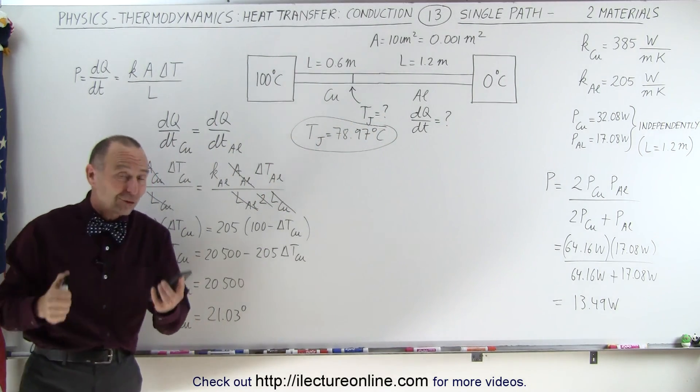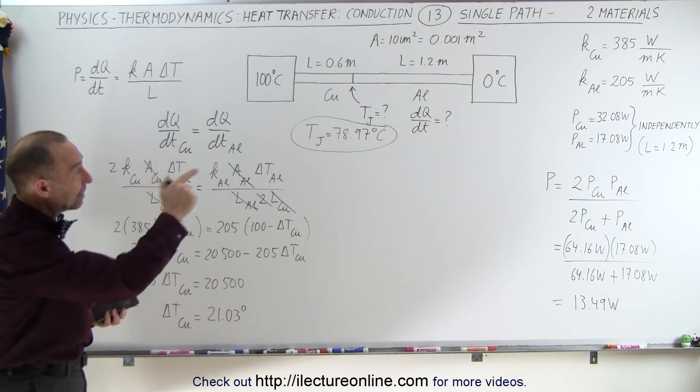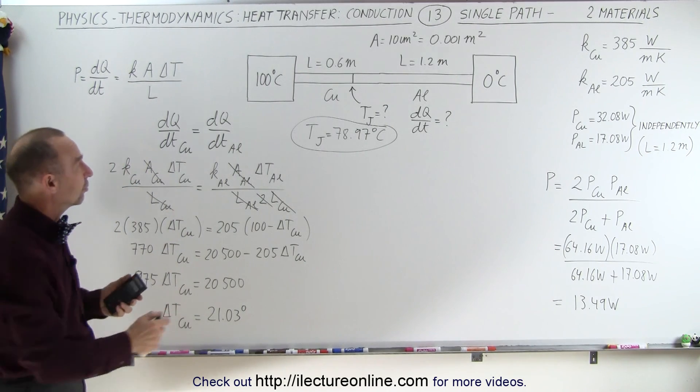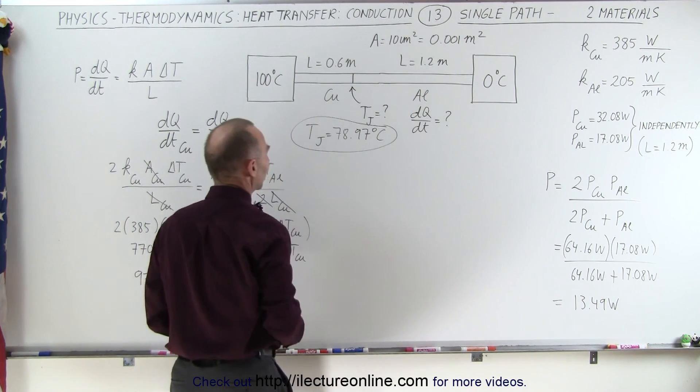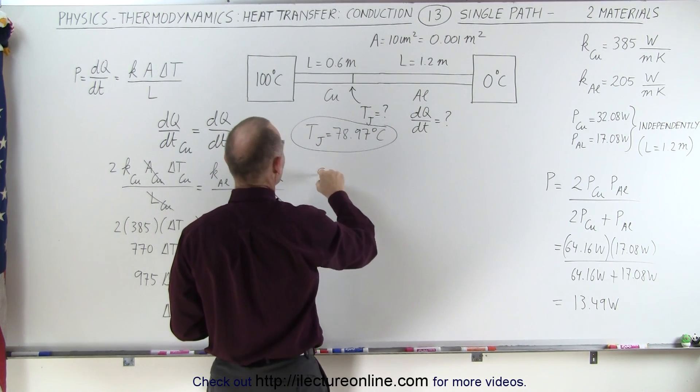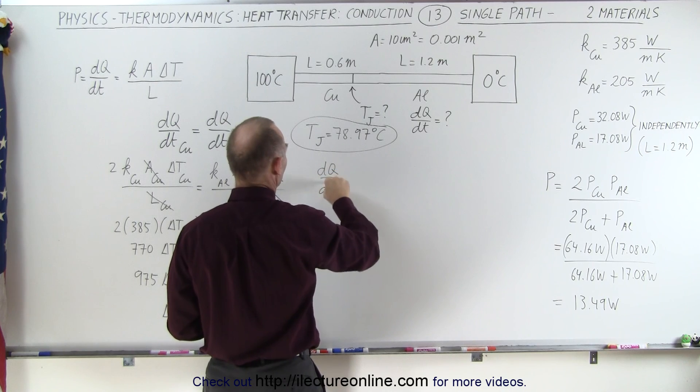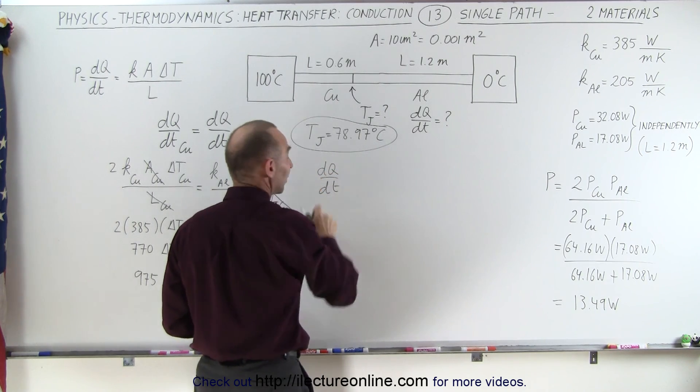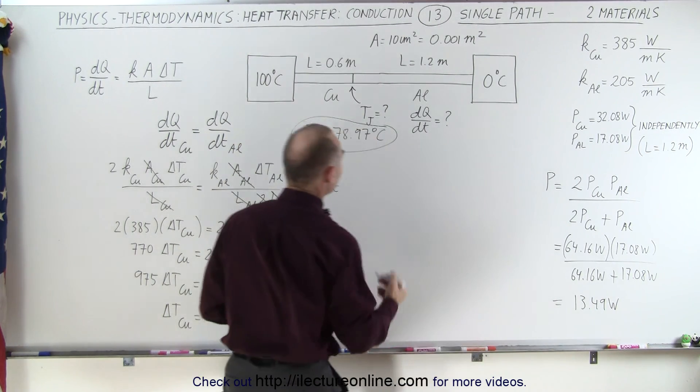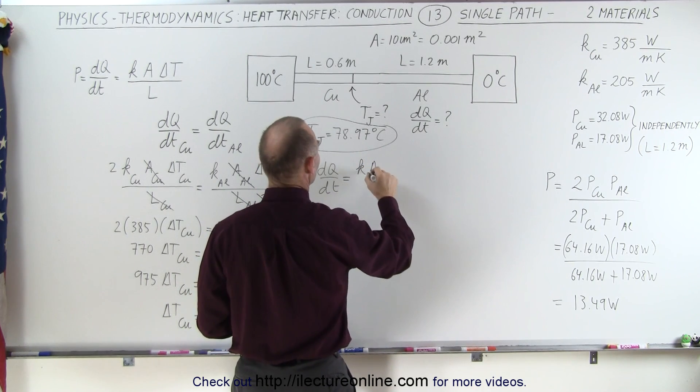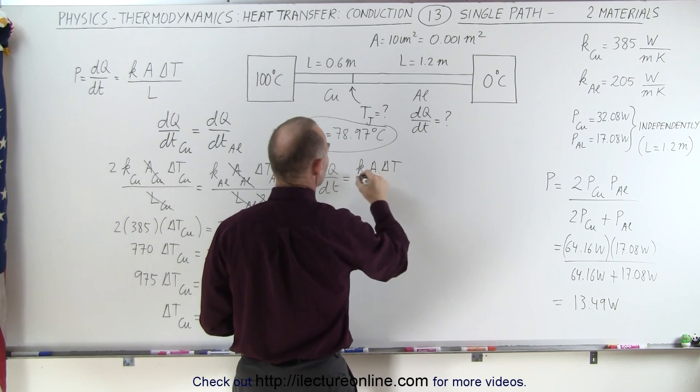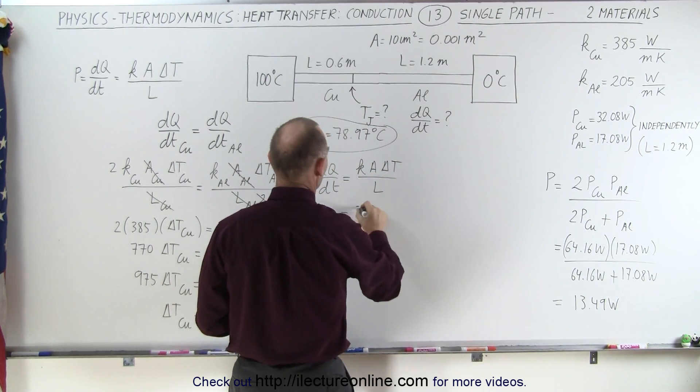So now that we have the temperature at the junction, now we can calculate the heat flow to any of the two sections. So let's do the heat flow to the first section, which is the same as the heat flow to the second section. So dQ/dt, and of course we expect that to be exactly the same as what we found over here. Let's find out, that's equal to kA delta T divided by the length.